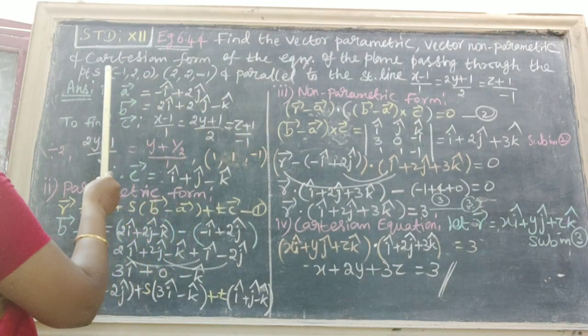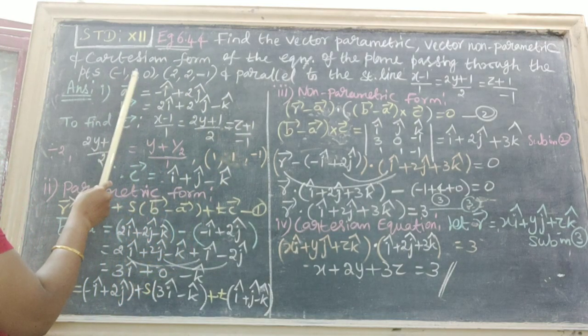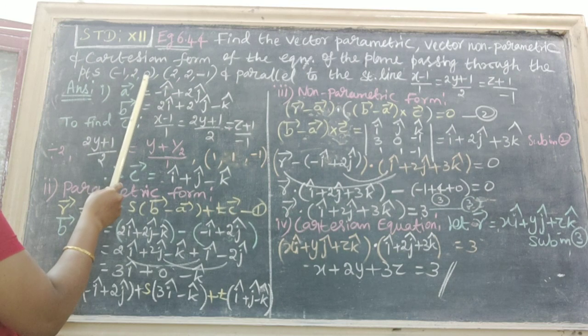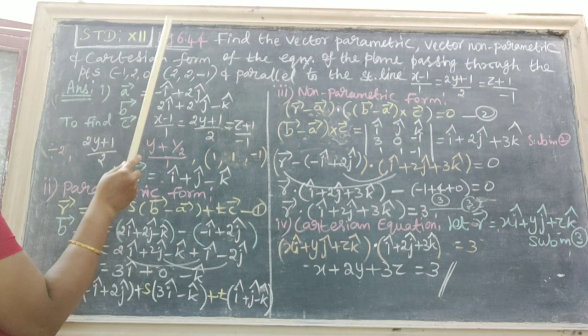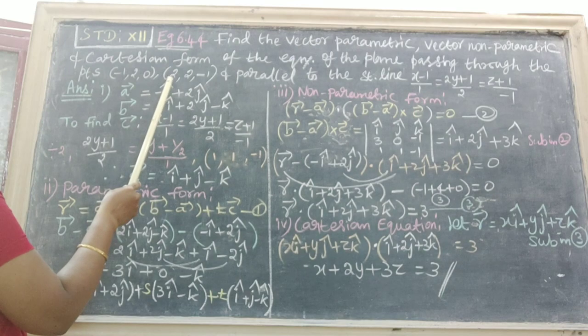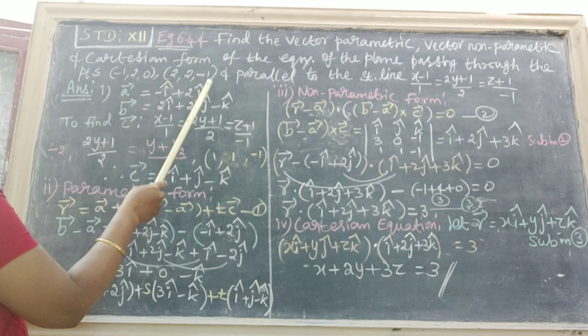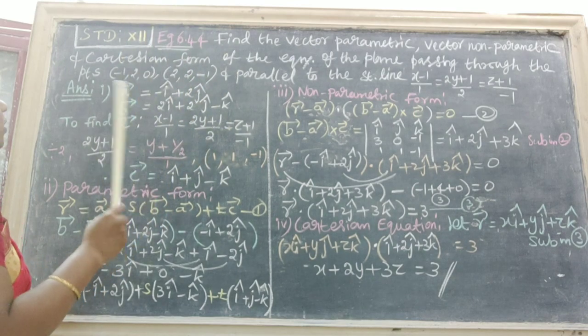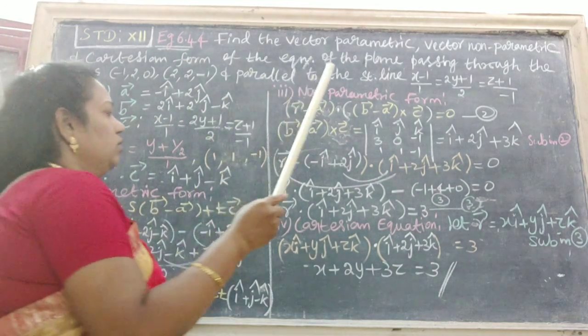Here, consider a vector equal to -i cap + 2j cap, here 0, therefore k is here 0. Next one is b vector equal to 2i cap + 2j cap - k cap. To find the point c vector, therefore...